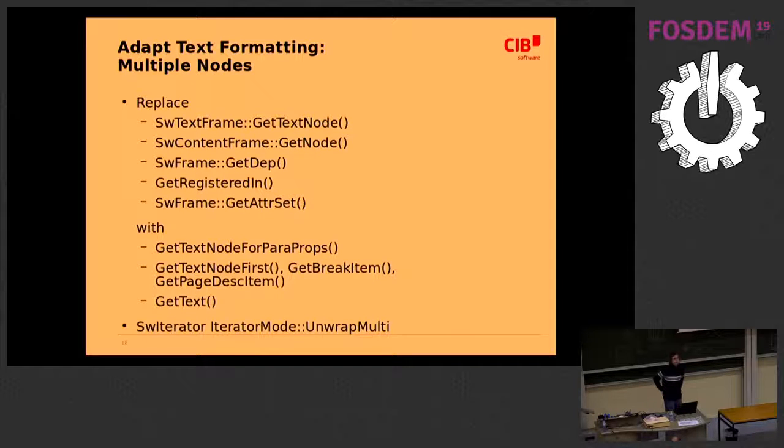We have this other problem that we now have multiple nodes connected with the text frame instead of just one. We had to remove like five different functions from the text frame that all returned this one node and replace it with a couple other new functions that return the text node to be used for the paragraph properties, the first text node, and also the text itself, which is now the merged text, which previously was coming from the one text node.